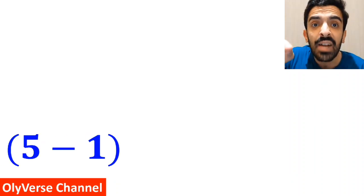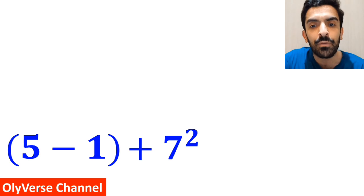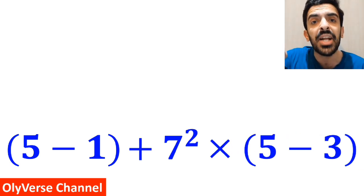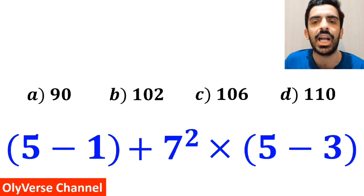What is the value of the expression 5 minus 1 inside the parenthesis, then plus 7 to the power of 2 and multiply by 5 minus 3 inside the parenthesis? Which option do you think is the correct answer to this question?